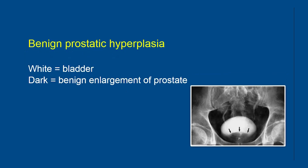Enlargement of the prostate can also be seen very well on a full bladder film — as you can see in this case, there is indentation of the bladder base. The dark area here is the prostate and the white area is the bladder. Of course, the distinction between benign and malignant pathology cannot be entirely made on IVU and further investigations may be needed.